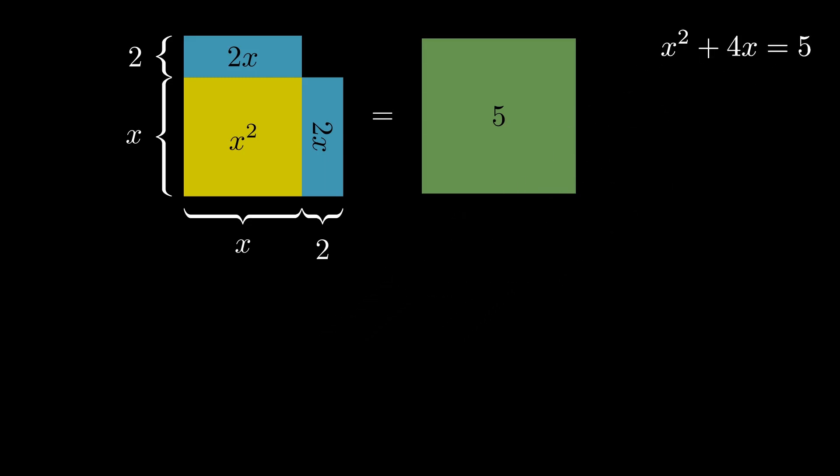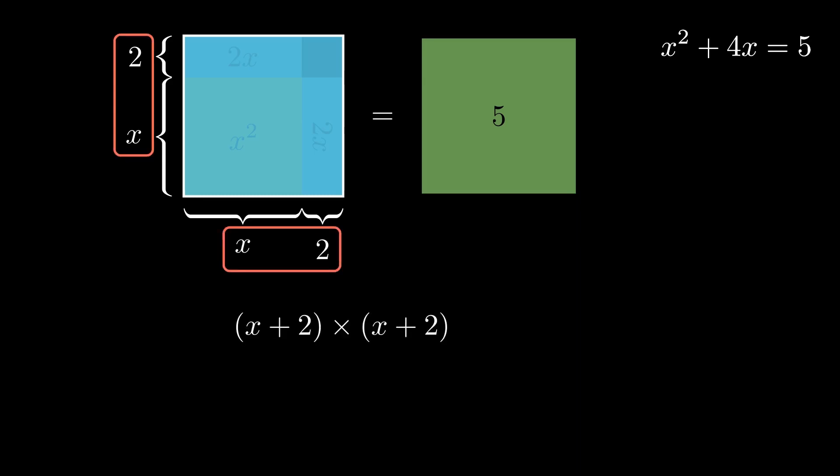Instead, what we can do is, we can complete a square and calculate the entire area on the left side by multiplying the sides with each other. In this case, x plus 2 times x plus 2. And then, we can subtract the empty spot on the top right by subtracting 2 times 2, and set that equal to 5.